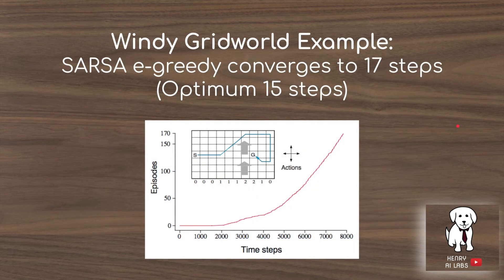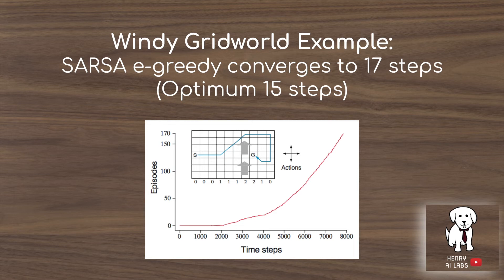The windy grid world example shows how the epsilon-greedy SARSA algorithm converges to a good but not quite optimal policy. Because it is on-policy with epsilon-greedy action selection, it converges to a maximum of 17 steps to solve the mapping from start to goal, whereas the optimal policy requires 15 steps, since the epsilon-greedy algorithm isn't always behaving optimally even if it has learned near-optimal Q functions.